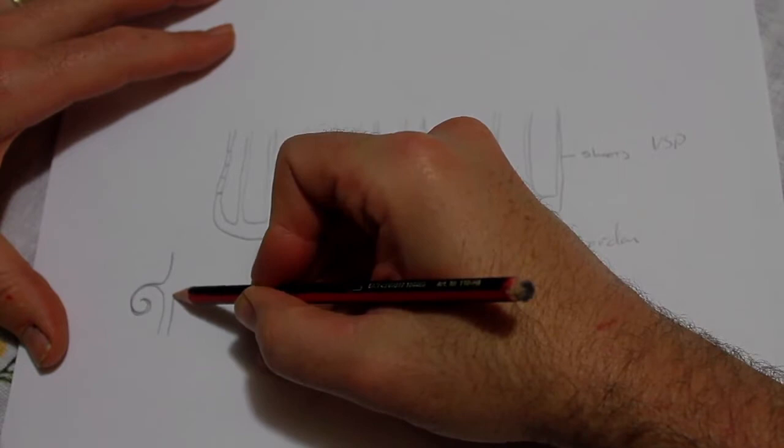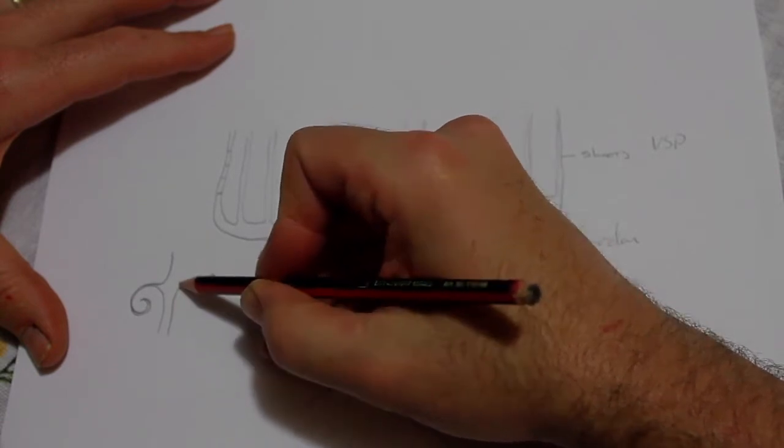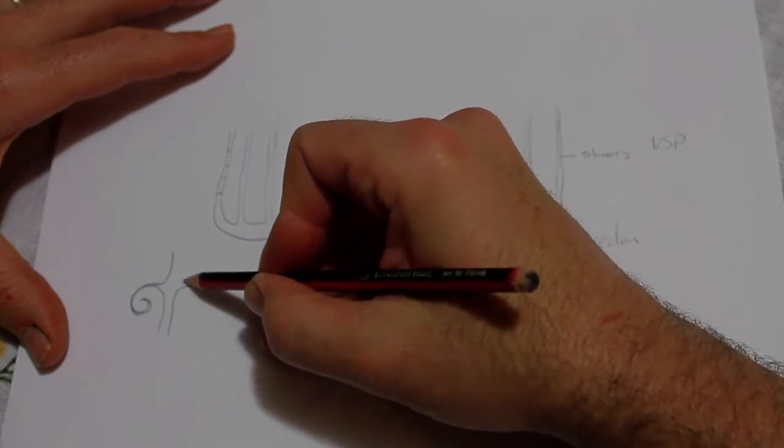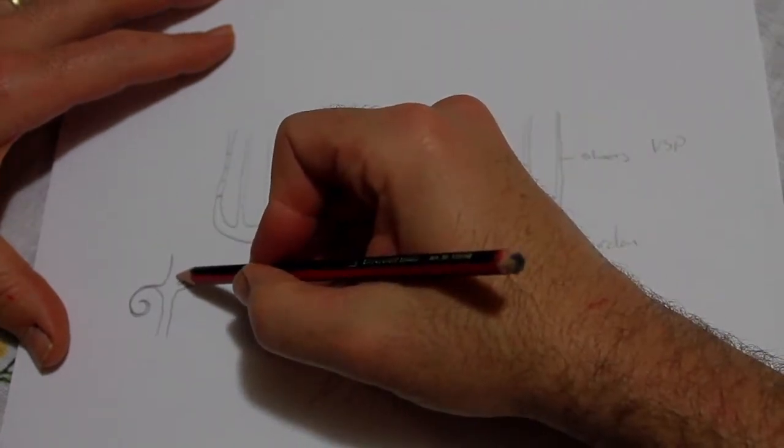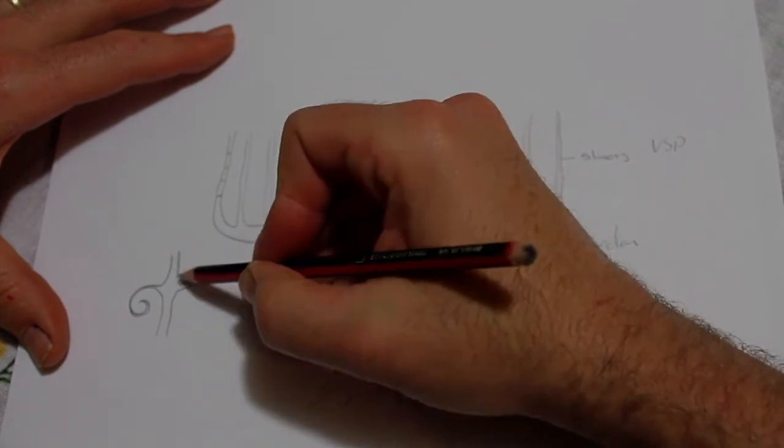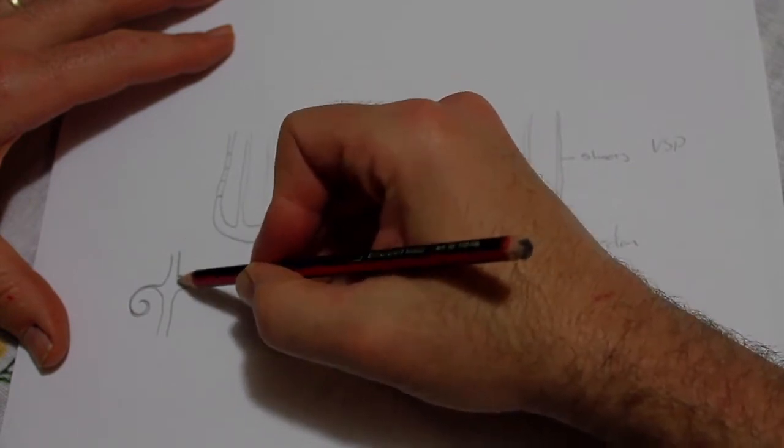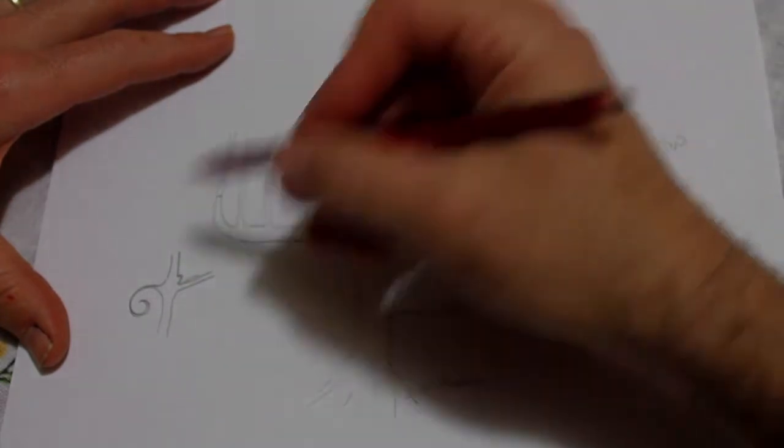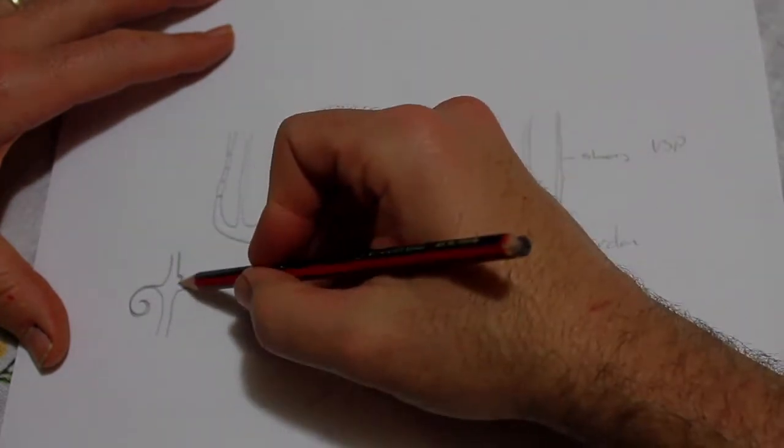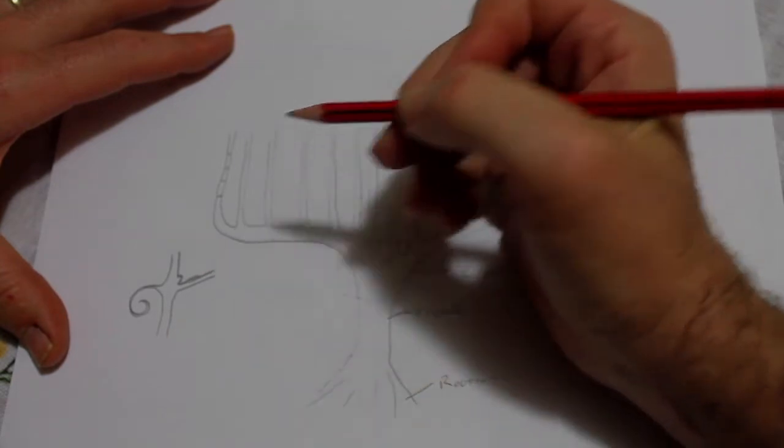On this side we will have a petiole, which is a leaf stem. That goes out to support a leaf. And then we'll have, just above that, the bud. Now the bud carries up to two to three shoots of next year's growth, and it ripens as the node matures during the growth of the shoot.